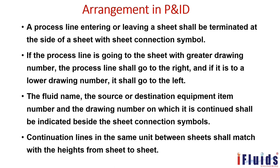Continuation lines in the same unit between sheets shall match in height from sheet to sheet. The P&ID sheet sides are labeled A, B, C, D. If a line exits at a certain height on one sheet, it must enter at the same height on the next sheet. Practically, we have to match these — small corrections may exist when drawing, but as much as possible continuation lines shall match with the heights from sheet to sheet.